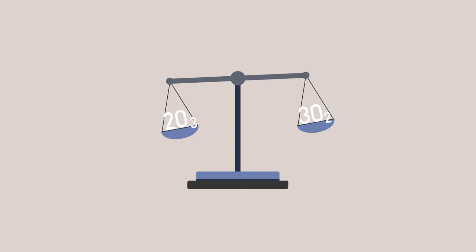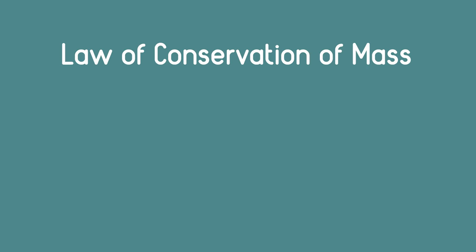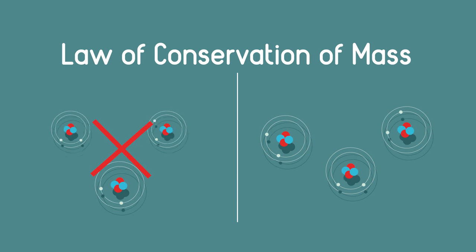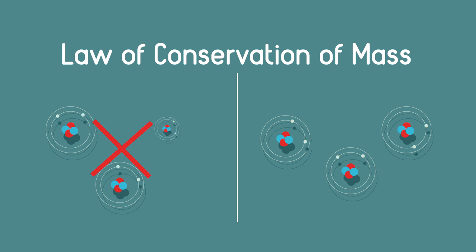In this video you're going to learn how to balance chemical equations. The law of conservation of mass states that no atoms are lost or made during a chemical reaction. They cannot be made from nothing and they cannot vanish into nothing.